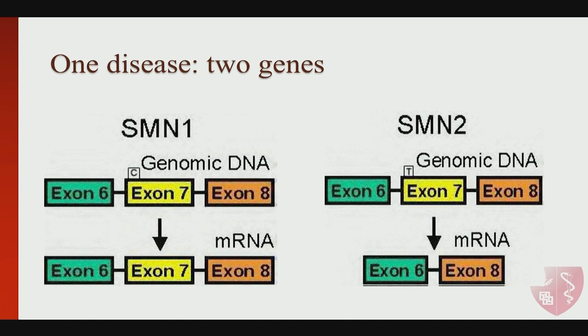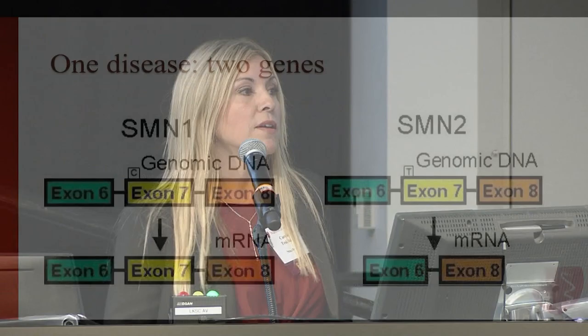This is one disease with two genes, which doesn't happen often in the world of neuromuscular diseases. In a way, it's great that we have a paralog gene that is pretty much the same as the one these patients unfortunately are missing. When you don't have SMN1 copies, it is fundamental to have SMN2 — otherwise it's incompatible with life. Depending on how many copies of SMN2, we see different phenotypes, knowing that two plus two is never four in medicine, so we cannot make assumptions based on copy number alone.